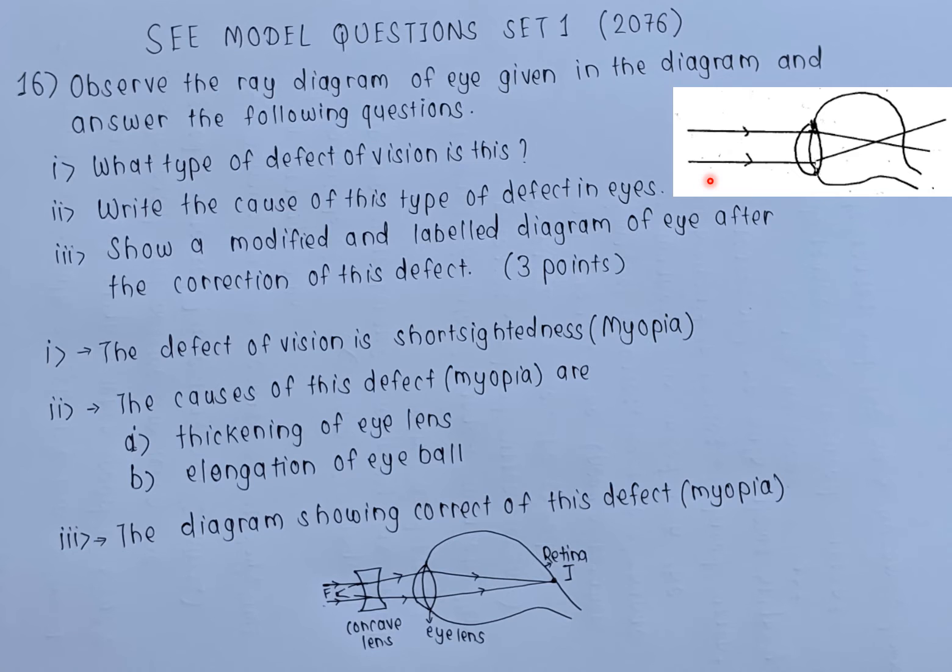The diagram is given over here. The first question: you have to identify the defective vision. If you look at the diagram, you see the parallel rays coming from far distance converge well before the retina. So this is the case of short-sightedness.